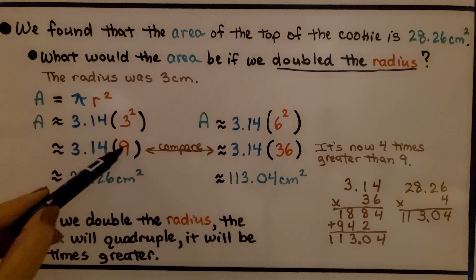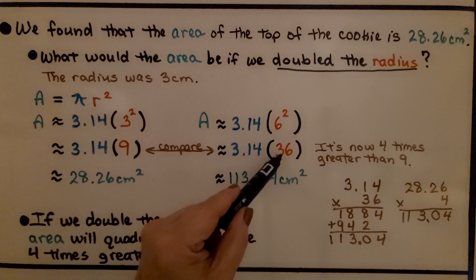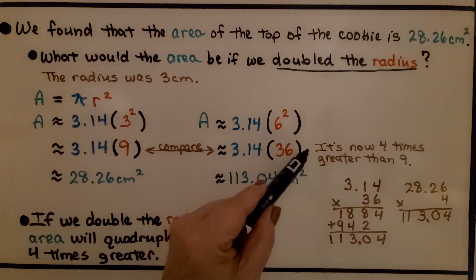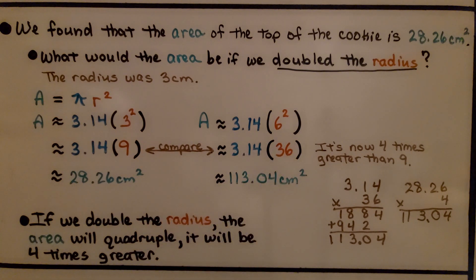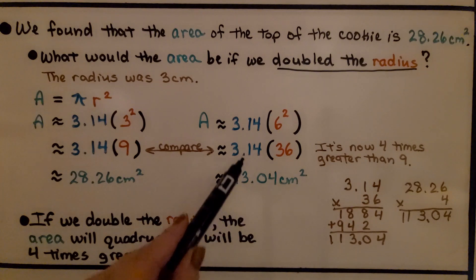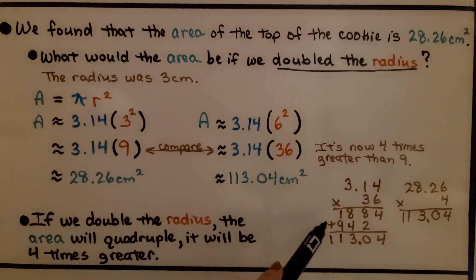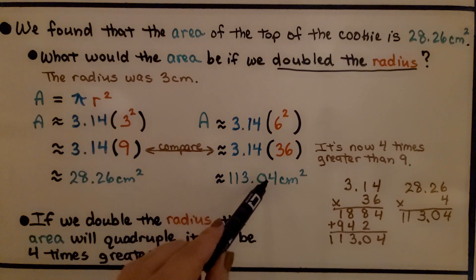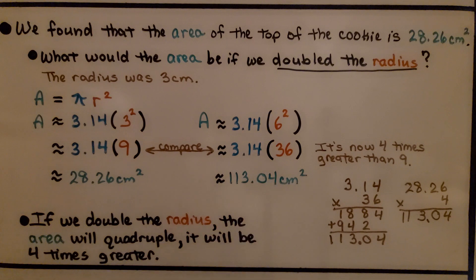Look, we had a 9 here, and when we doubled the radius, now we have a 36 here. It's now 4 times greater than 9. And when we multiply 3.14 times 36, we get 113.04. So it would be 113.04 centimeters squared. Now look, if we did 28.26 times 4, we get 113.04.